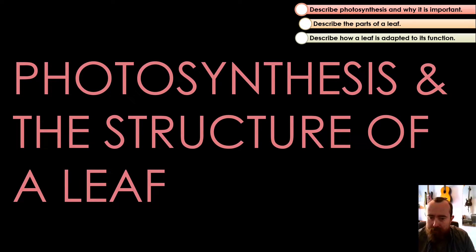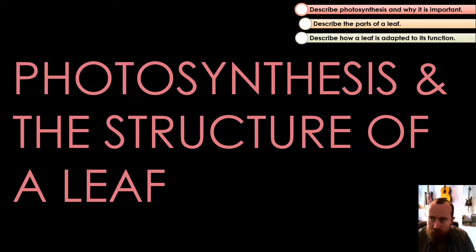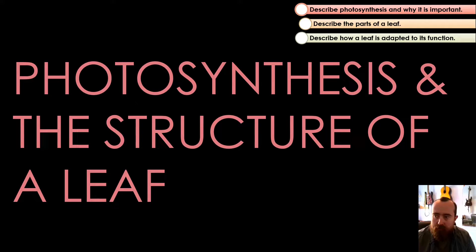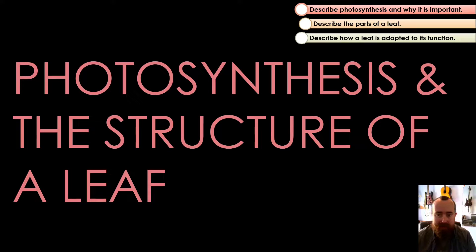Today we're going to be having a look at photosynthesis and the structure of a leaf. We're going to look at three things: we're going to describe why photosynthesis is important and what it is, we're going to look at the word equation for it, we're going to look at the different parts of a leaf, and then we're going to think about why a leaf is well adapted to its function — meaning why is it good at its job.